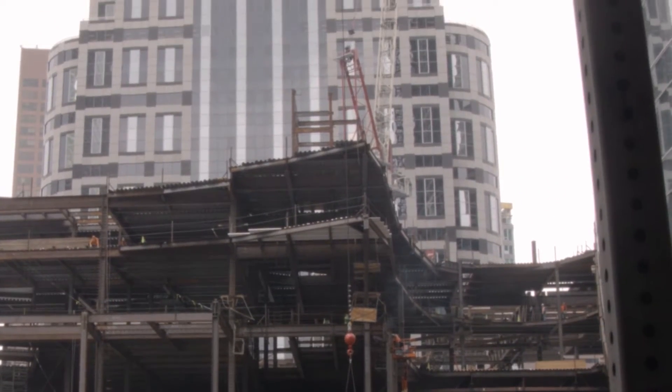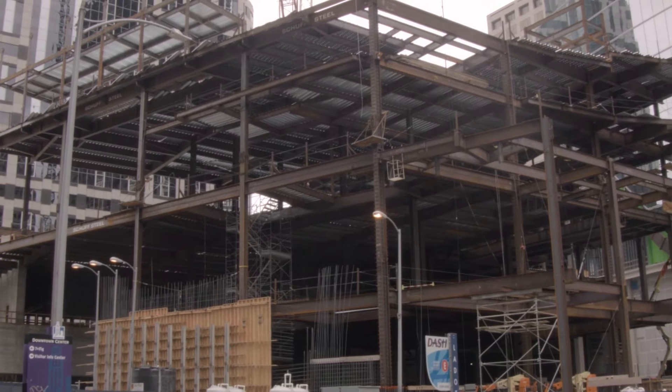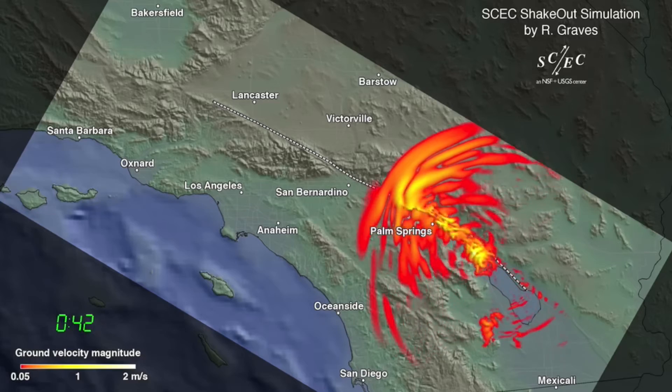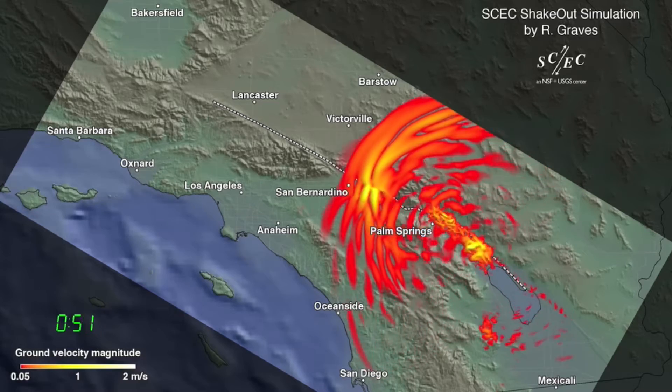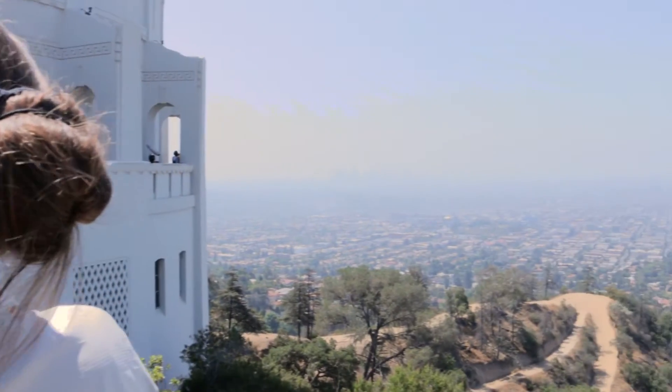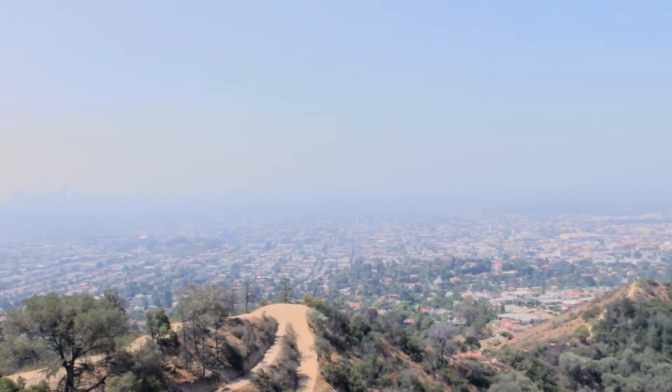That allows the engineers to make the correct design decisions and start, for example, retrofitting the most dangerous buildings. The common thread has been trying to better understand the physics of earthquakes and to use that understanding of the physics to eventually make real practical gains in reducing risk from earthquakes in California.